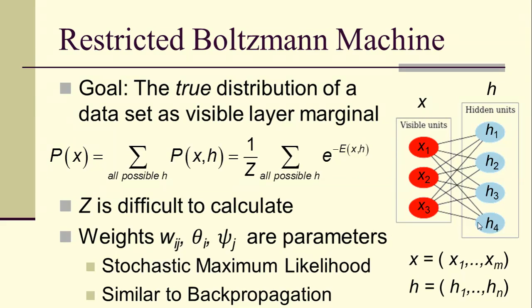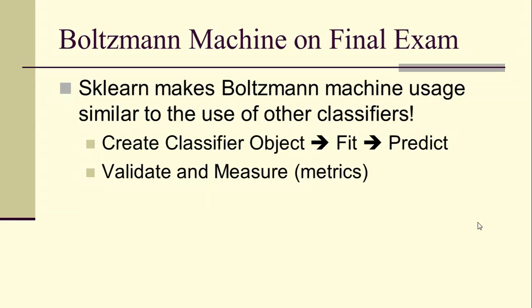Now these weights are parameters, and so it's no surprise that you can actually find these parameters using a thing called stochastic maximum likelihood, which is similar to backpropagation. And we'll look at the Boltzmann machine on the final exam. It's actually a neural network that combines the two ideas of the universality of the three-layer network and the energy minimization of the Hopfield network. But SKLearn will make it available to us in much the same way that it always does. We'll create a classifier object, we'll do a fit, and then we'll make a prediction, and we'll validate and measure using metrics.